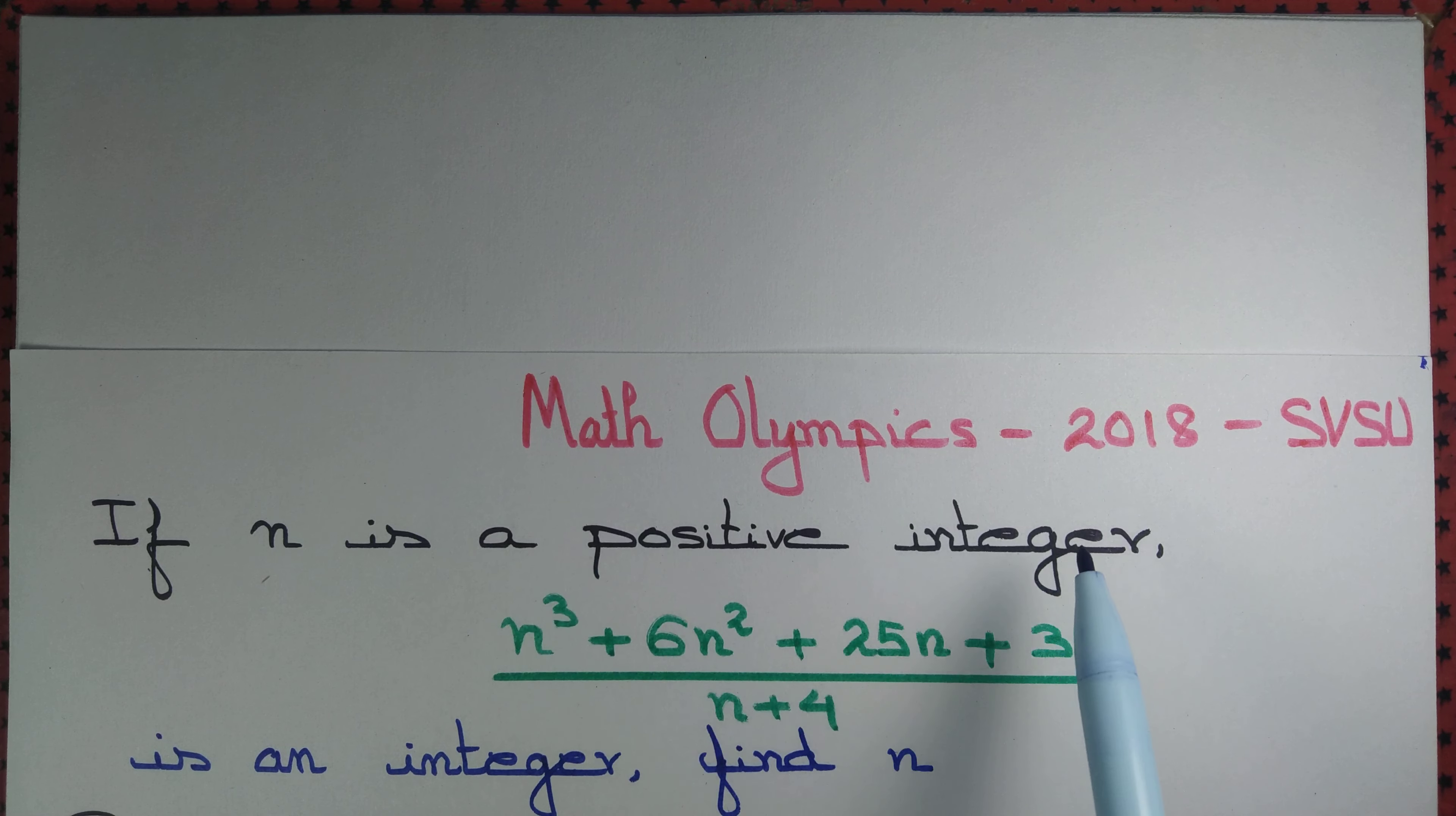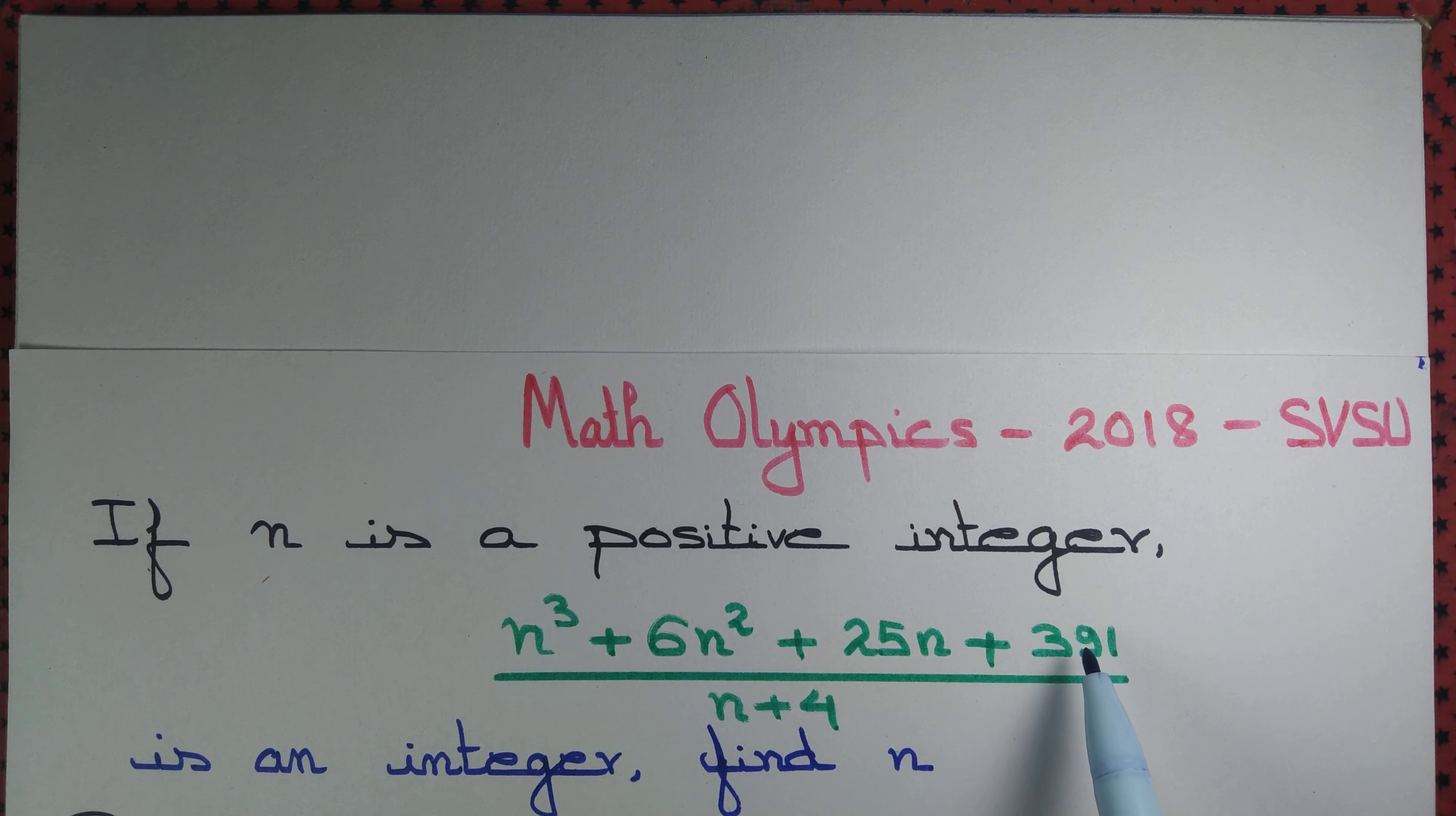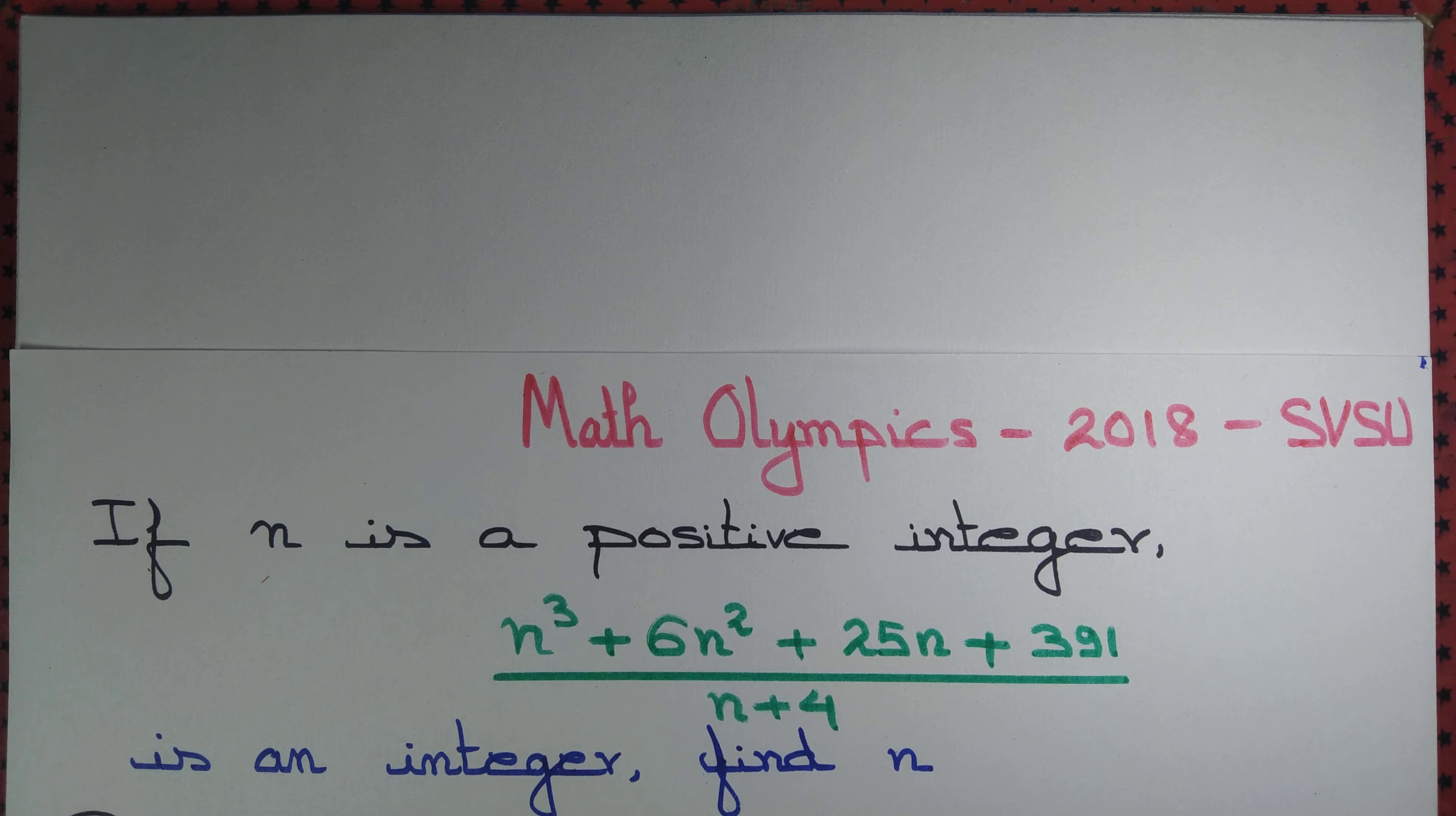If n is a positive integer and n cubed plus 6n squared plus 25n plus 391 divided by n plus 4 is also an integer, can we find the value of n? The answer is yes.